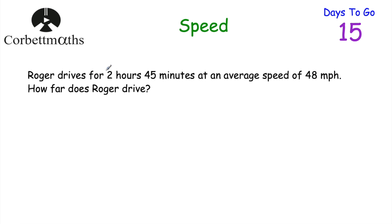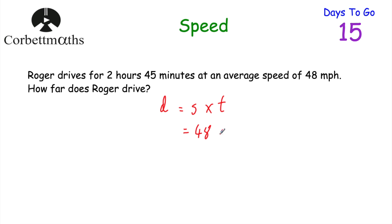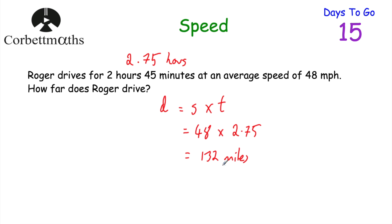The next question says: Roger drives for 2 hours and 45 minutes at an average speed of 48 miles per hour. How far does Roger drive? Feel free to press pause now. Distance equals speed multiplied by time. He drives at 48 miles per hour. 45 minutes is three quarters of an hour, so 0.75 — making the time 2.75 hours. So we do 48 multiplied by 2.75, which equals 132 miles. Well done if you got that.